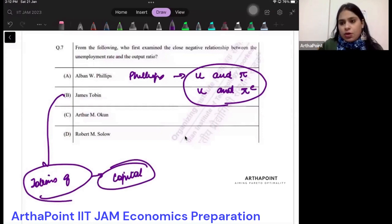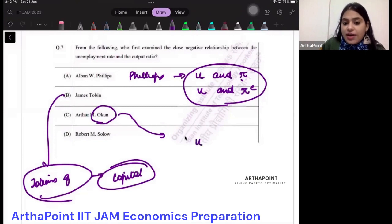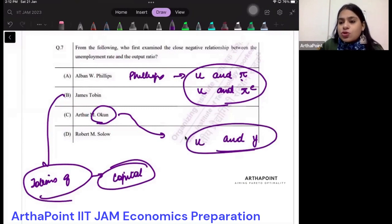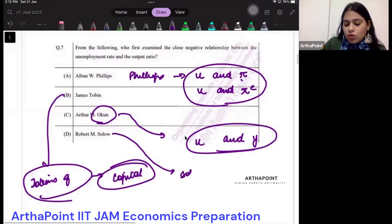Okun, on the other hand, can be linked to Okun's law, and he is the one who determines the relationship between unemployment and output. The correct answer is Okun. And Solow is linked to the Solow model.